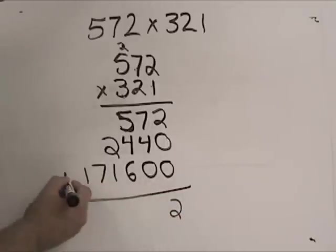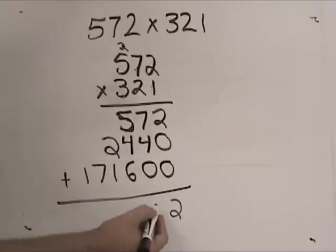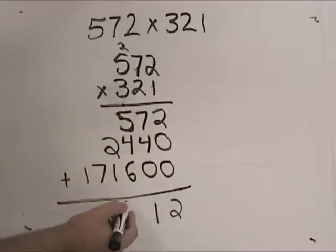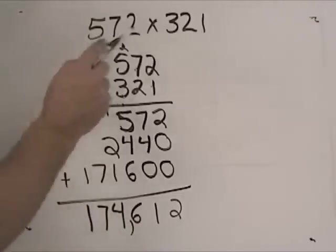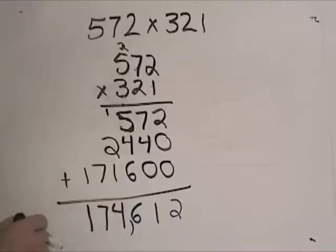And if I were to add all those together, add all my products together, get 1, carry the 1, 16, carry the 1, 4, 7, and 1. So, my answer for a three-digit problem would be 174,612.